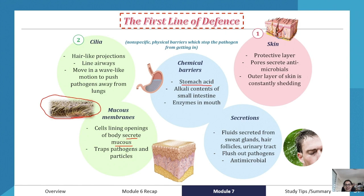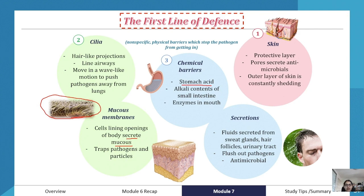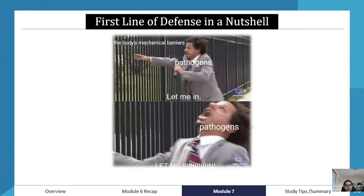So to summarize: the first barrier is the skin, the second is the cilia, then chemical barriers, mucous membranes, and secretions. These form a sequence — a pathogen first encounters the skin, and if it gets past that it encounters the cilia, and if it gets past the cilia it encounters the chemical barriers. The mechanical barriers do a pretty good job of protecting the body most of the time.